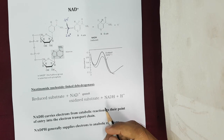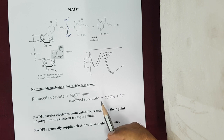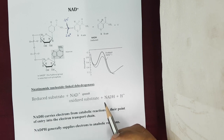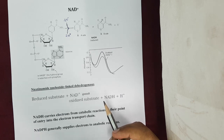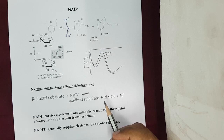Dear students, in the previous class we discussed about some of the aspects related to the electron transport system and also the different complexes present in it. Before understanding the electron transport system in detail, we need to understand the electron carriers which play a very important role in the electron transport system. There are many electron carriers, and today we are going to discuss about that.